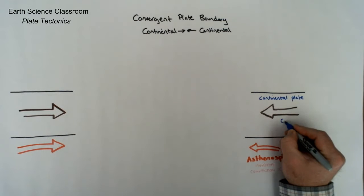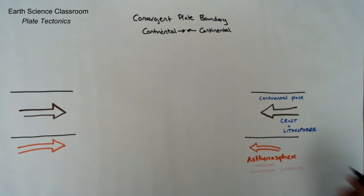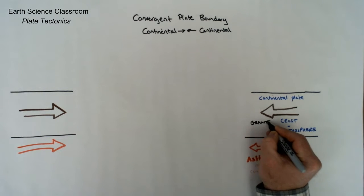Below it we have the asthenosphere which is our plastic, able to flow layer which includes the magma and includes our convection currents which is the basic mechanism for moving the plates above.